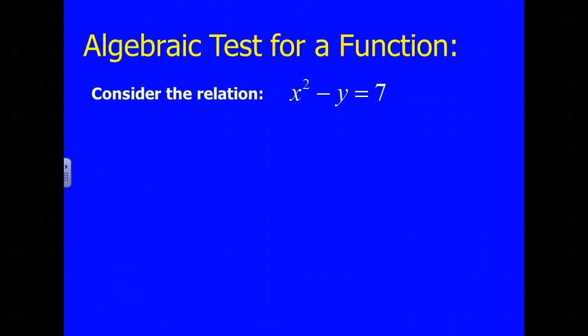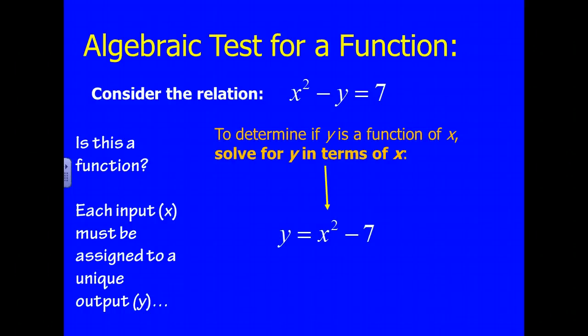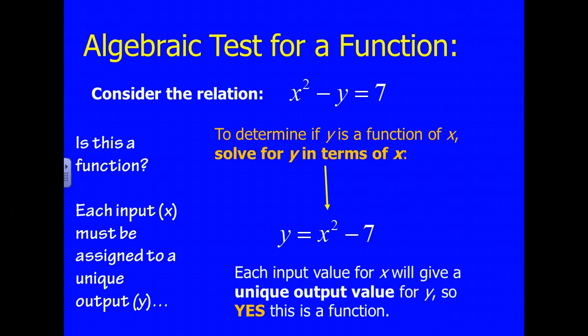Okay, algebraic test for a function. If I see something like this, what I can do is solve for y and see what kind of solving, what the solving does. And make sure that for any x value that I plug in, I only get out one y. So if I do that, I solve for y, and I'm going to get y equals x squared minus 7. And any x that I plug in there, I am only going to get out one y. So yes, this is a function. Take notes and pause if you have to. And we also say that this is y in terms of x. That means we solve for y, and everything over here is x or numbers. No other things.